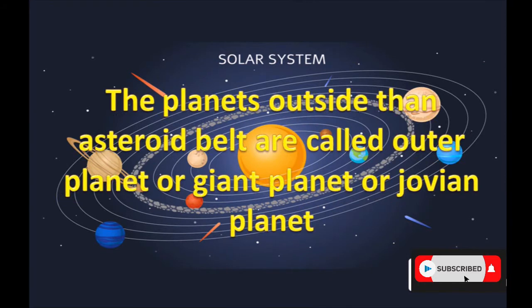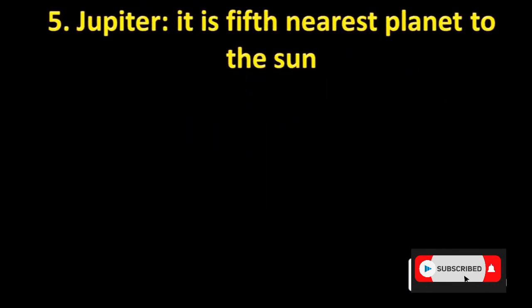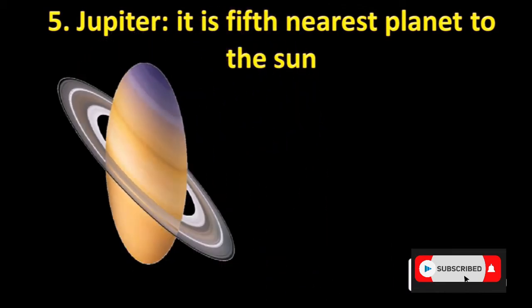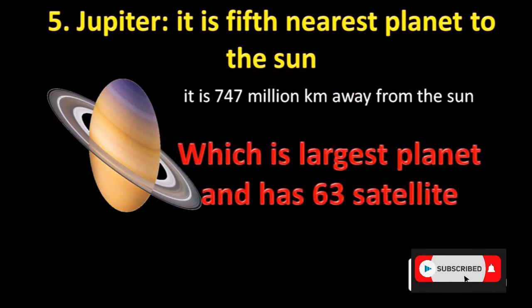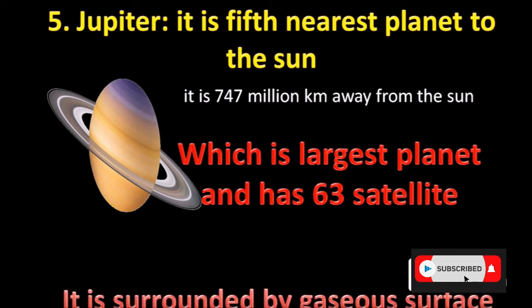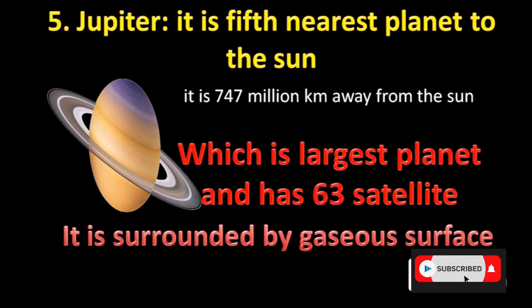The planets outside the asteroid belt are called outer planets, giant planets, or Jovian planets. Generally, the surface of these planets is made up of gas. The fifth planet is Jupiter, the fifth nearest planet to the sun. It is 747 million kilometers away from the sun and is known as the largest planet, with 63 satellites and a gaseous ring surrounding it.